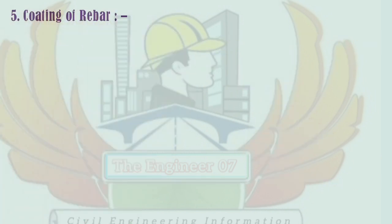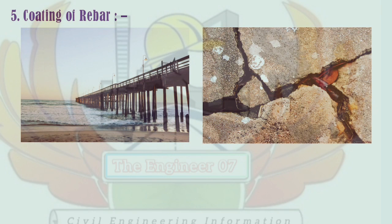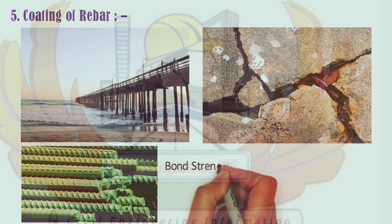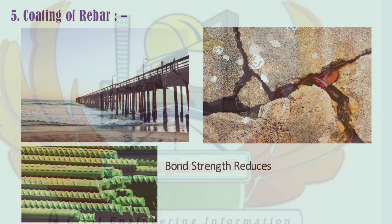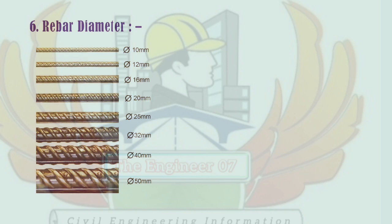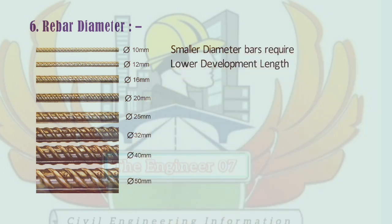Factor 5: Coating of rebar. In projects where the structure is subjected to corrosive environmental conditions or deicing chemicals, epoxy-coated rebars are used instead of normal rebar. Studies have shown that in such cases the bond strength between concrete and rebar is reduced, and thus more development length is required. Factor 6: Rebar diameter. The most important and common factor influencing development length is the diameter of the reinforcement used. Smaller diameter bars require lower development length than larger diameter rebars.